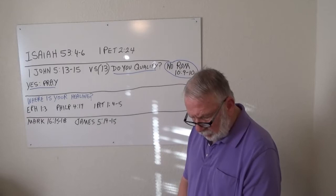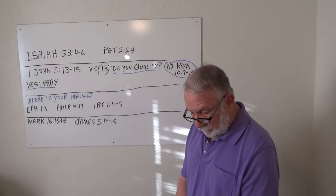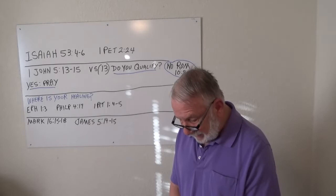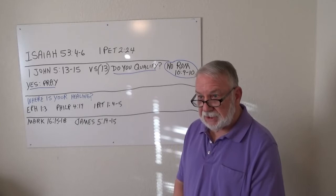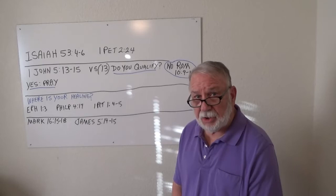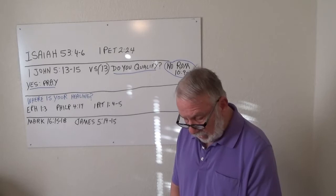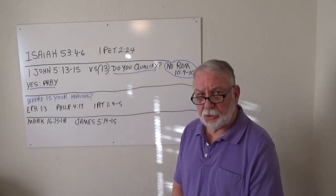1 John 5, 13 and 15. John writes, I write these things to you who believe in the name of the Son of God, so that you may know that you have eternal life. This is the confidence we have in approaching God, that if we ask anything according to His will, He hears us. And if we know that He hears us, whatever we ask, we know that we have what we ask of Him. The first test in this Scripture is, do you believe? Have you made Jesus the Lord of your life?